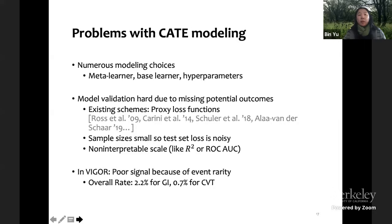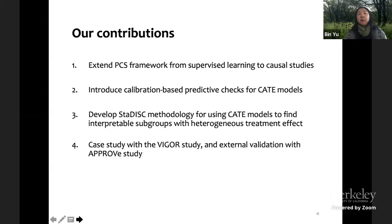The problem with missing potential outcome is that we never observe two at the same time because you get randomized into one or the other. How do you check a model like reality check? And we have very imbalanced data as well because these events happen quite rarely. Our print contributions actually extend a framework. My group has been developing and collaborating with PCS, which I'll tell you in the next slides. We introduced calibration-based predictive checks for CATE models.